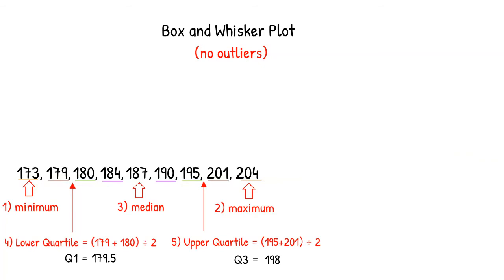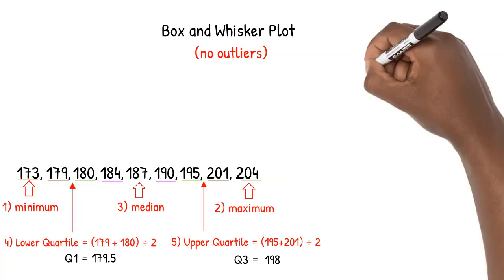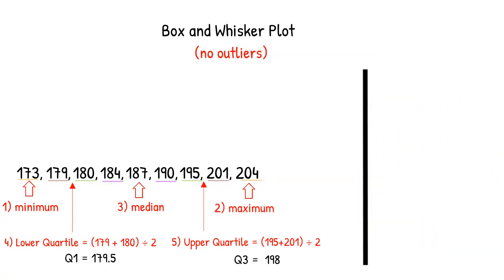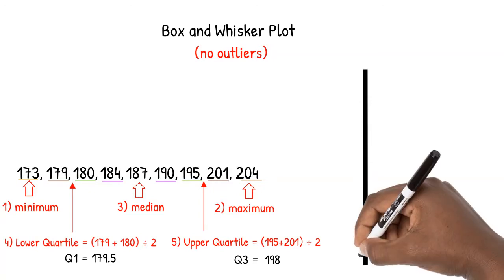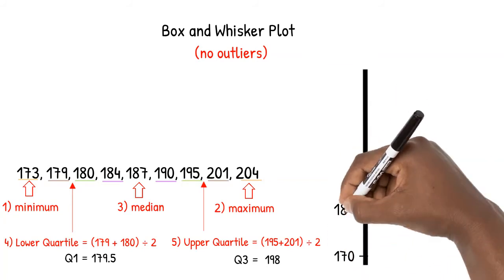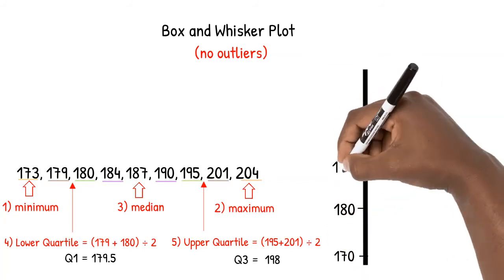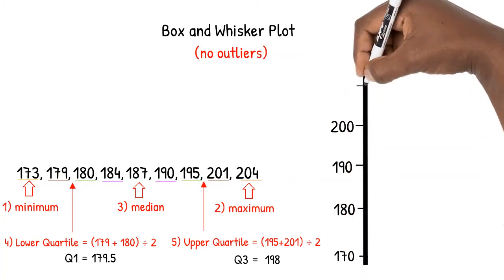Now that we recall how to find the 5-number summary, let's learn how to draw the box and whisker plot. Start by drawing a vertical line on which to place our scale. The men's weights range from 173 pounds to 204 pounds, so I've chosen to start from 170 and count by 10s.